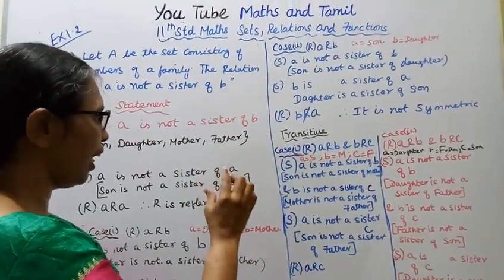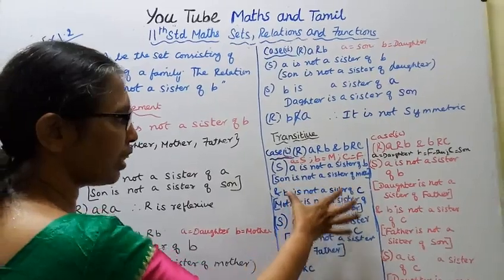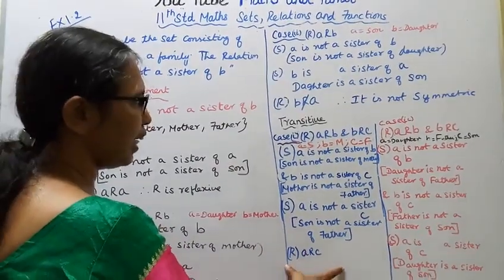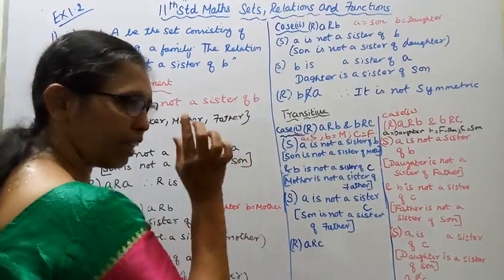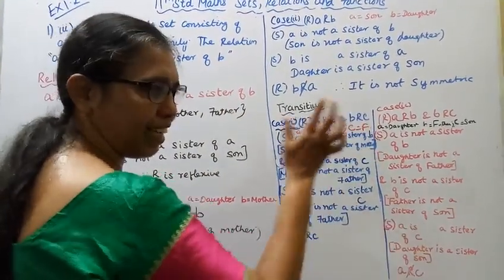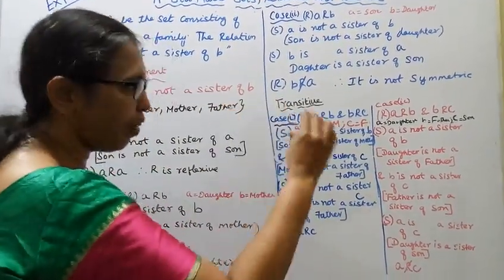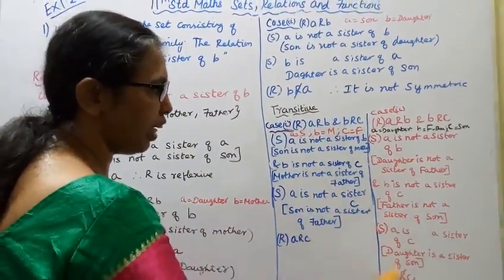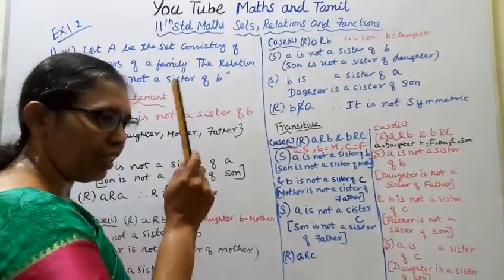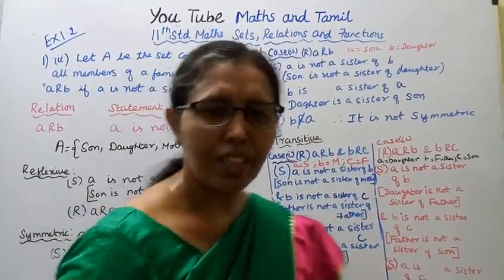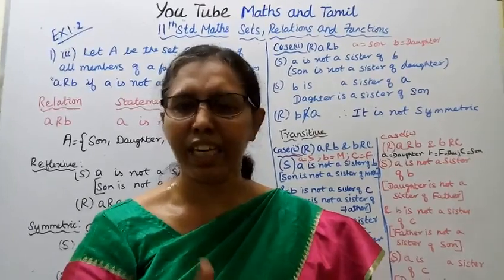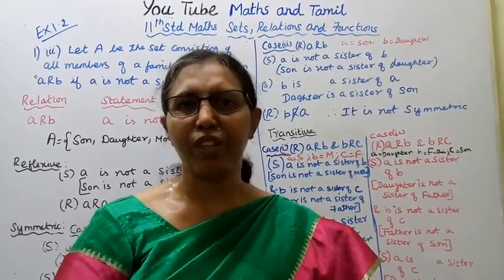To summarize: the statement 'a is not a sister of b' — when a is a sister of a sister, it creates a contradiction in transitivity. This channel helps you get 100 marks. Subscribe to the Marangaradi channel and click the bell button.